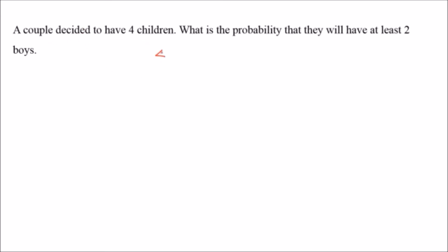So the question is given that a couple decided to have four children. What is the probability that they will have at least two boys? We know that the probability of having boys and girls is equal — half probability of being girls and half probability of being boys. But here the question is a little bit different: it is asking for at least two boys.